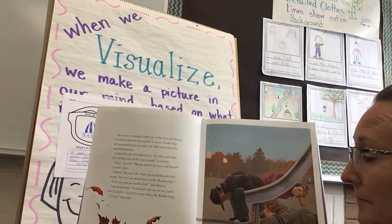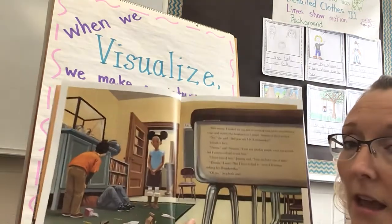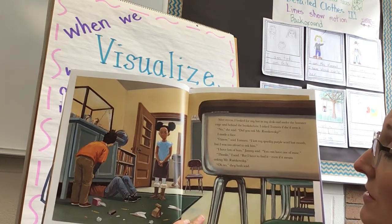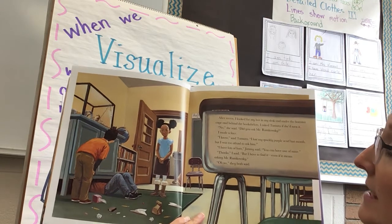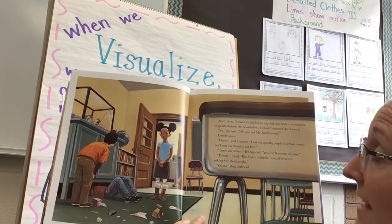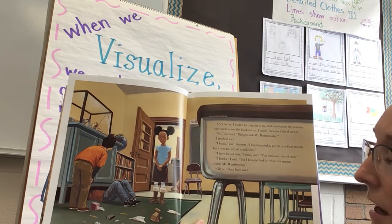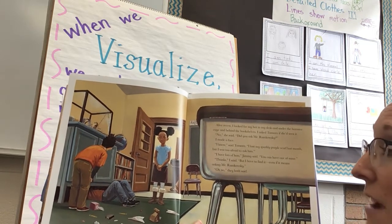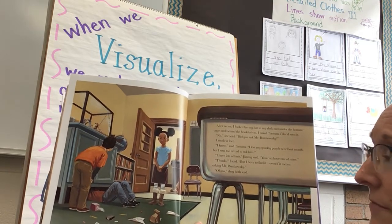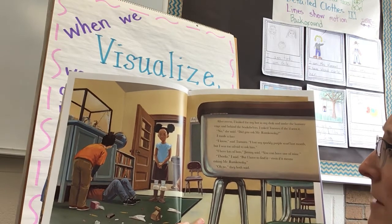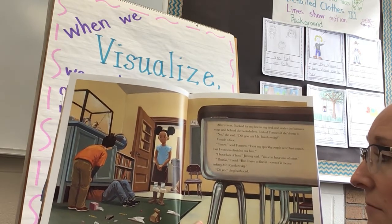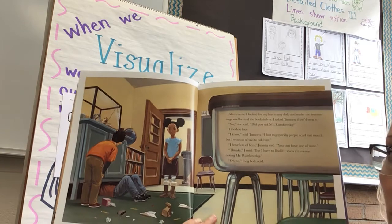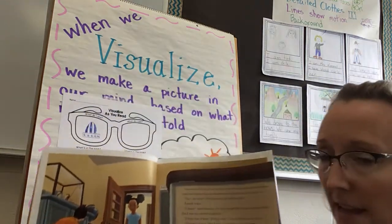'I lost my baseball jacket last month but I was too afraid to go see Mr. Rumkowski.' 'Can you just get another hat?' asked Jessica. I shook my head. 'Gran made that one for me and I have to find it even if it means asking Mr. Rumkowski.' 'Uh-oh,' they said. After recess I looked in my desk, under the hamster cage, and behind the bookshelves. Tamara said she'd lost her sparkly purple scarf but was too afraid to ask him. Jimmy offered me one of his hats, but I said I have to find it even if it means asking Mr. Rumkowski. 'Oh no,' they both said.